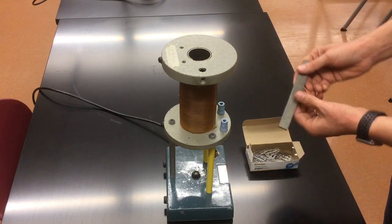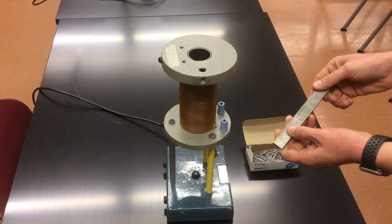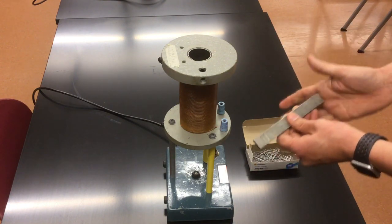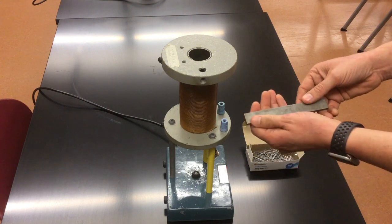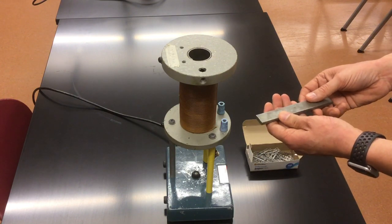If I were to bang on it repeatedly with a hammer, if I got it really hot, if I held it in a flame and banged on it, I could knock the domains all out of alignment and it would just act like a chunk of metal again and it wouldn't pick up the paper clips.